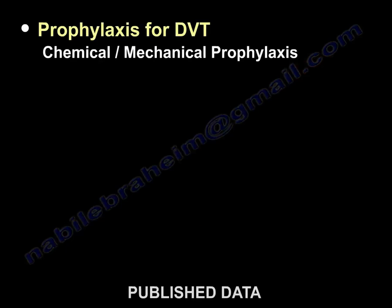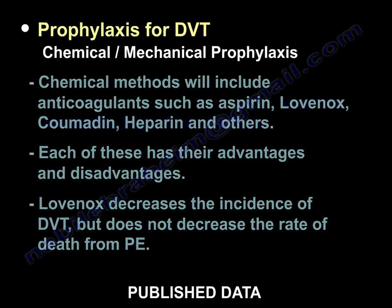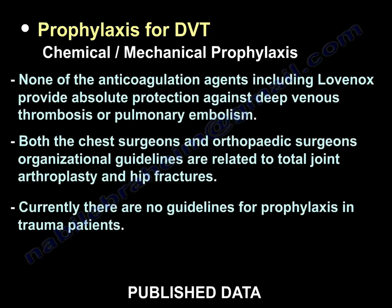Prophylaxis for DVT includes chemical or mechanical methods, or both. Chemical prophylaxis includes anticoagulants such as aspirin, Lovenox, Coumadin, heparin, and others, each with its own advantages and disadvantages. Lovenox decreases the incidence of DVT but does not decrease the rate of death from PE. None of the anticoagulation agents, including Lovenox, provide absolute protection against DVT or PE.